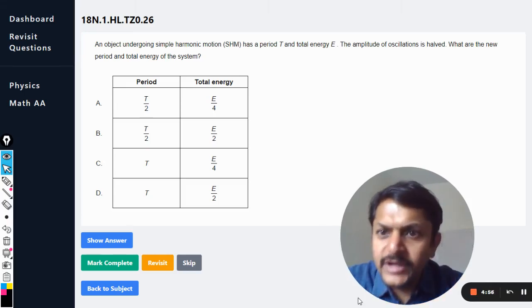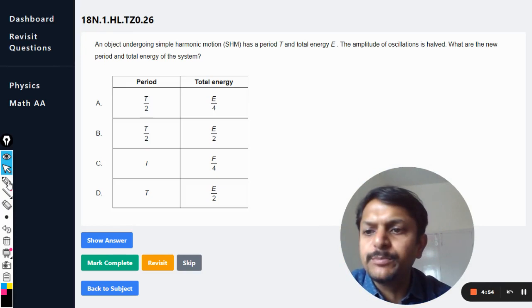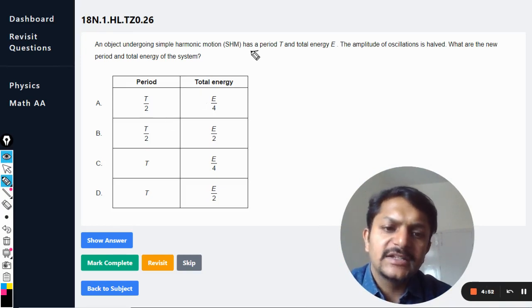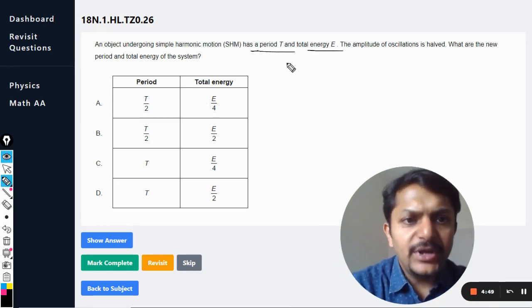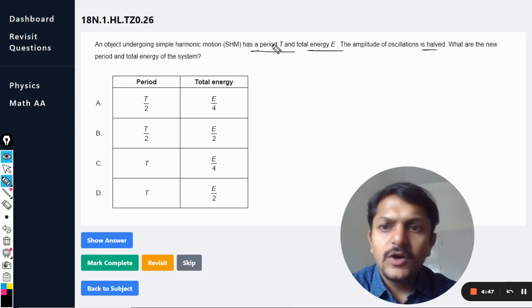Okay dear students, let us see what is there in this question. An object undergoing simple harmonic motion has a time period of T and total energy E. Amplitude of oscillation is now halved. What are the new time period and total energy of the system?